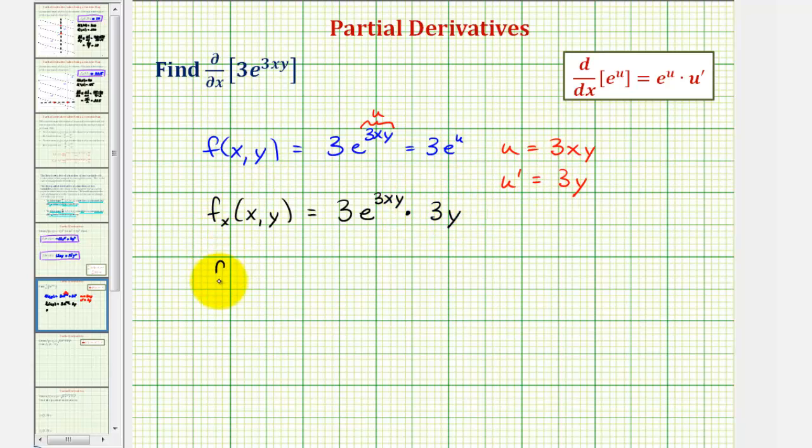So simplifying, our partial derivative with respect to x would be nine y times e to the power of three xy.